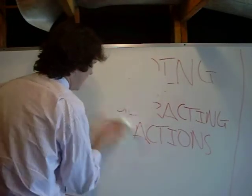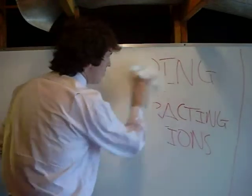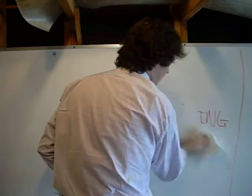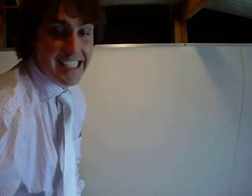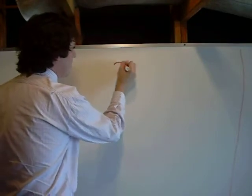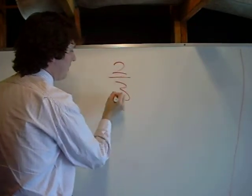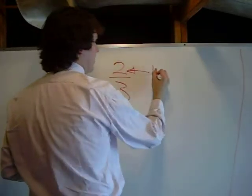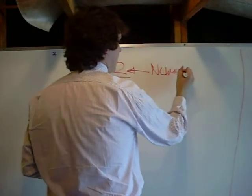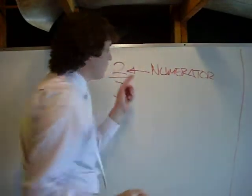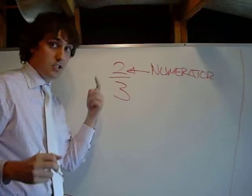So when you add and subtract fractions, one of the things that you have to absolutely make sure is that the denominator, or the bottom, is the same. So, if we have a fraction, let's look here. Two-thirds. Up top is what's known as the numerator. So whenever you hear anybody in math say the numerator, they're talking about the top number in the fraction, so the two.